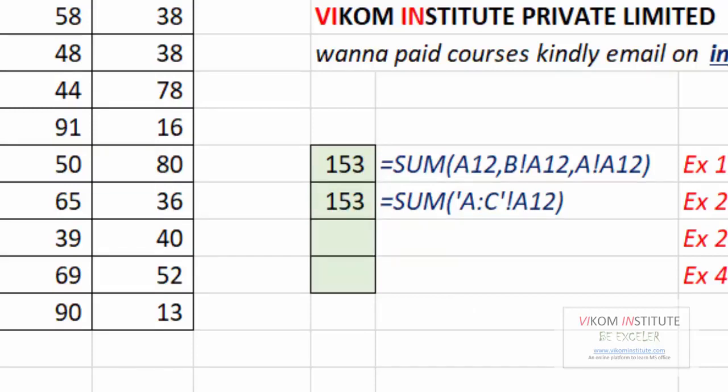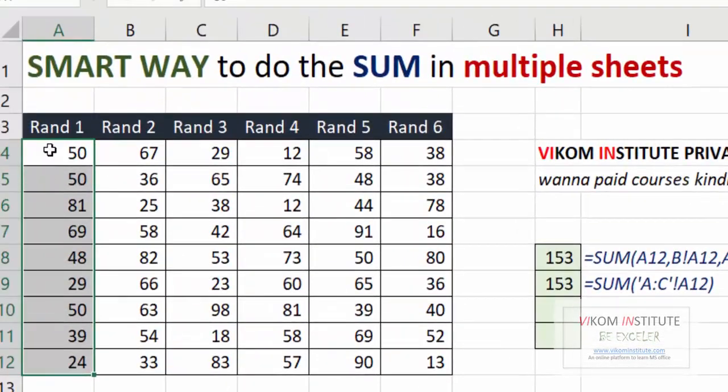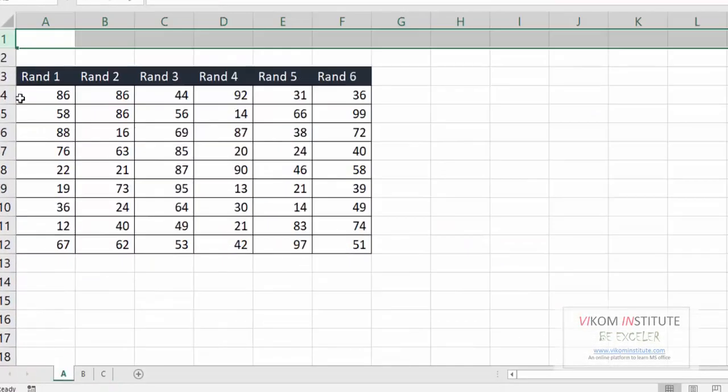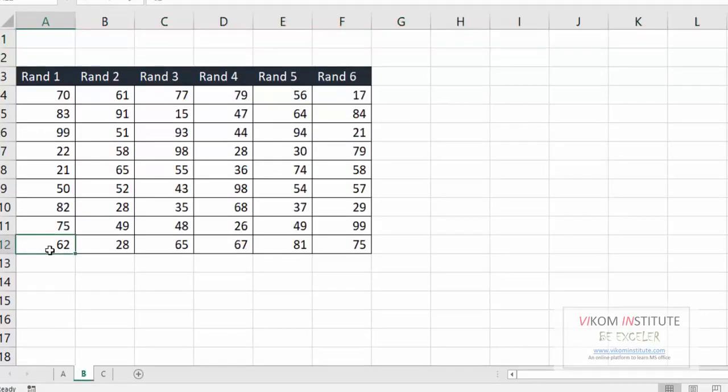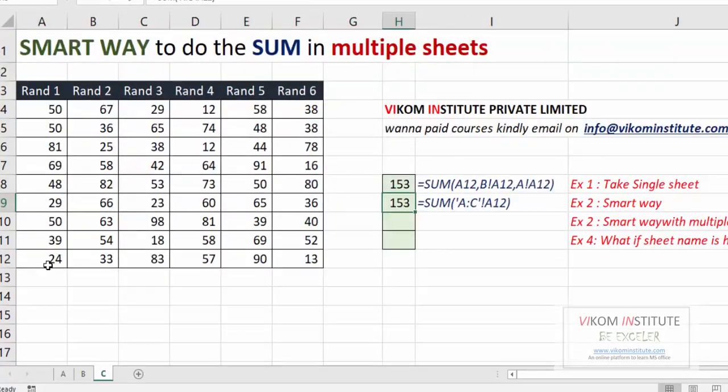So let's try to make a sum of these cells from A4 to A12. But be careful, whenever you are using this formula, the data size must be the same. A12 in B sheet we have A12, in C sheet we have A12. So let's try to find out the sum of multiple cells, I mean range for SUM.